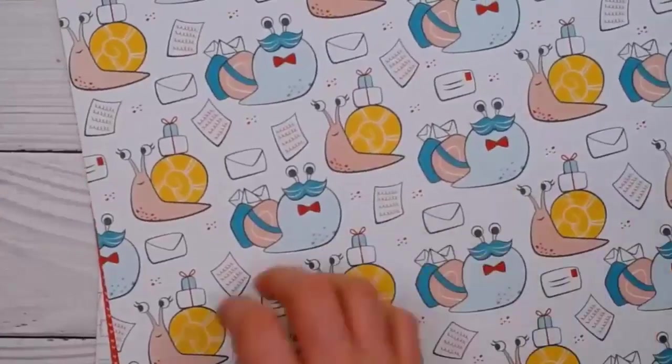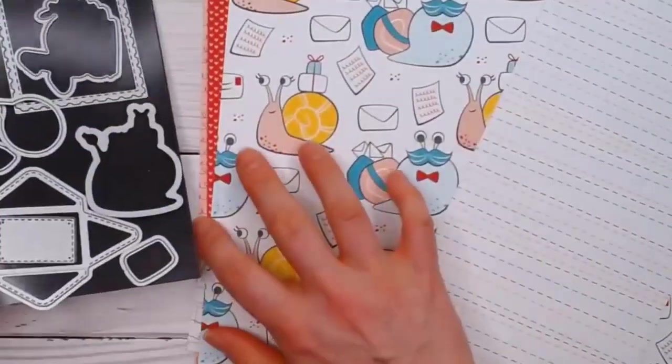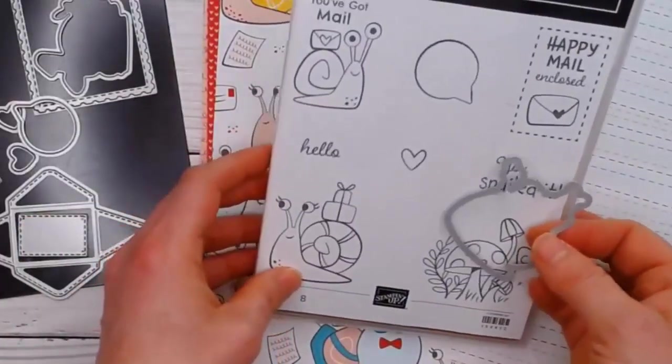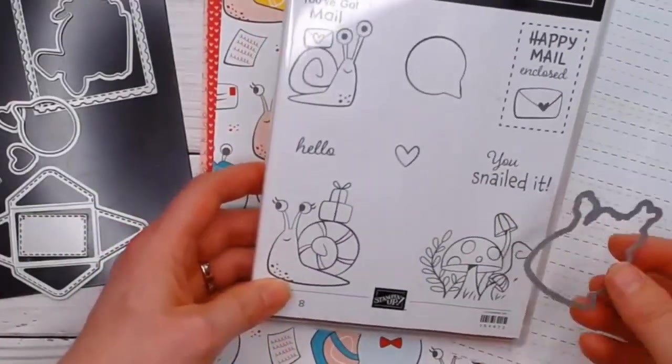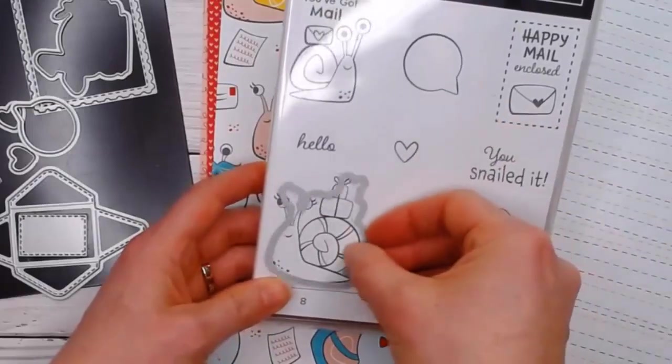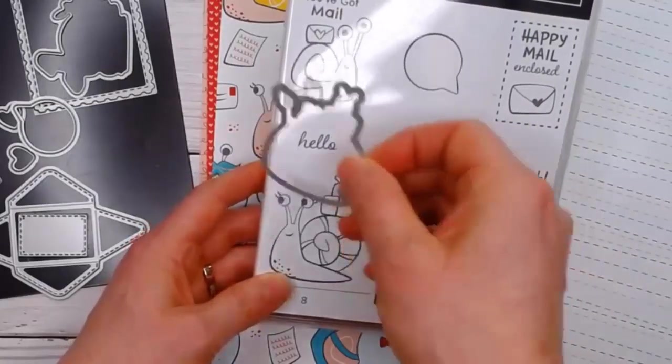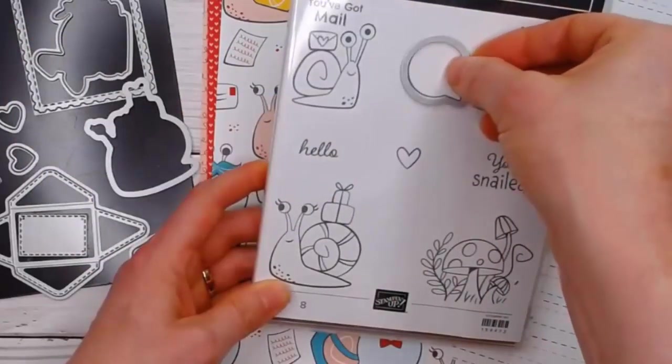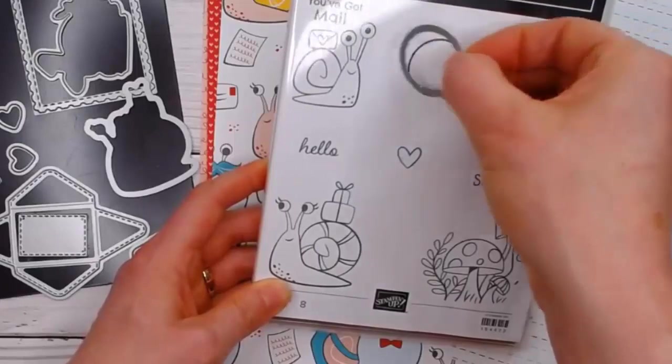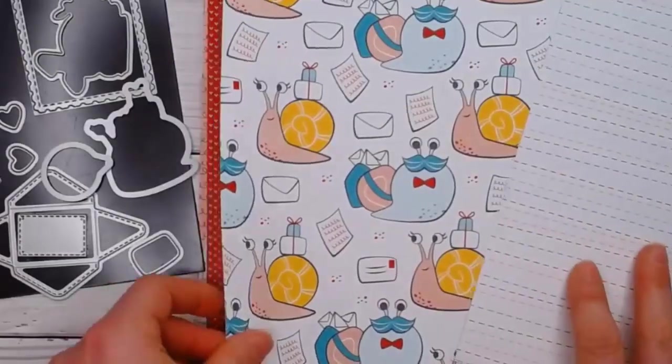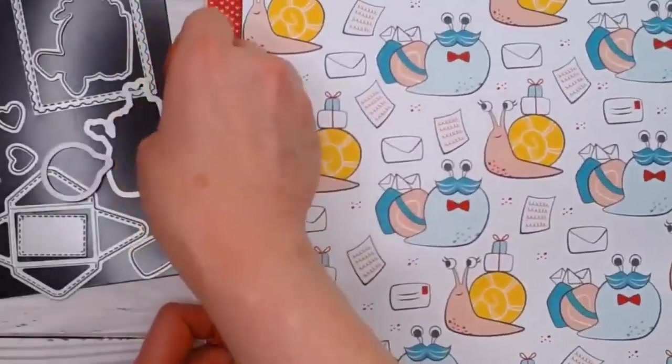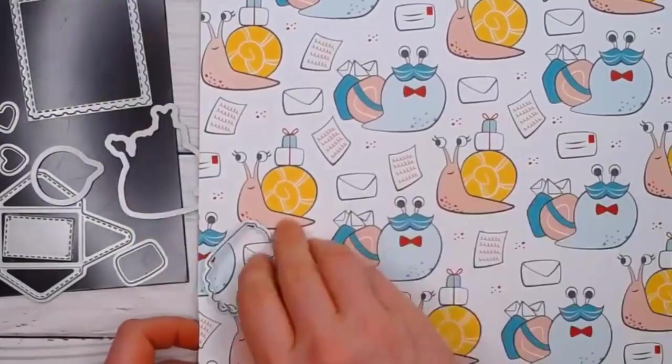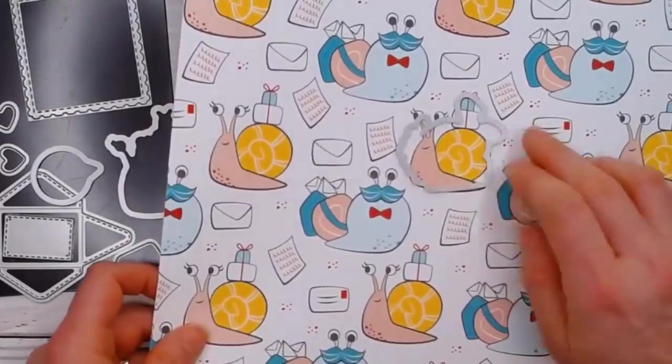Let me show you some of the cool things about the papers and the dies. You have the outline dies which of course go around your images so you've got the three dies for those. You also have the one for the little speech bubble here.